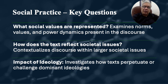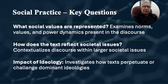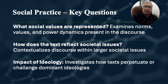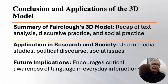Some key questions asked in dimension three include: What social values are represented in the text? What power dynamics have been utilized? How does the text reflect societal issues — what issue existed in the context that shaped the text in a particular way? We also investigate how the text perpetuates or challenges dominant ideologies. As a result, we can find out what is working behind the creation of the text and how people will receive it.